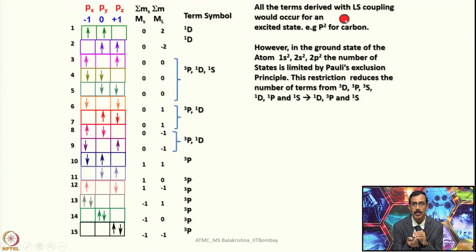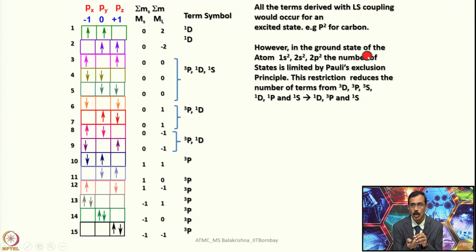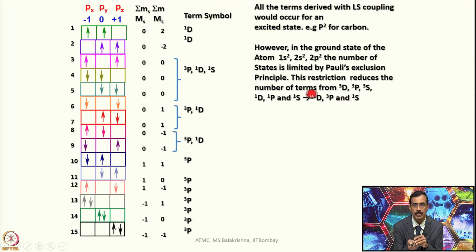All terms derived from LS coupling occur for excited states of P2 — for carbon (1s²2s²2p²). However, in the ground state, the number of states is limited by Pauli's exclusion principle. This restriction reduces the terms from ³D, ³P, ³S etc. to only ¹D, ³P, and ¹S. So we end up with only these three states, and electronic transitions in P2/carbon must focus on only these three energy levels.